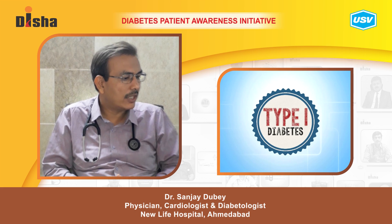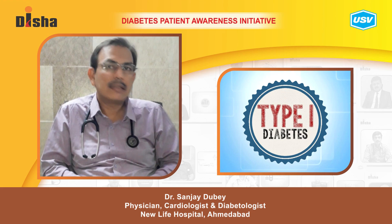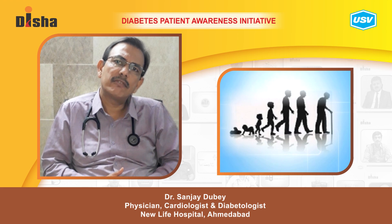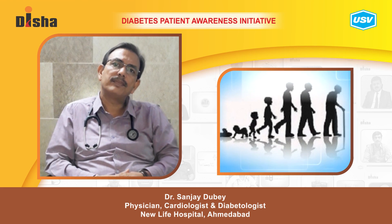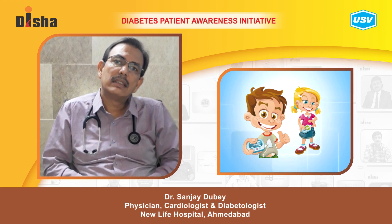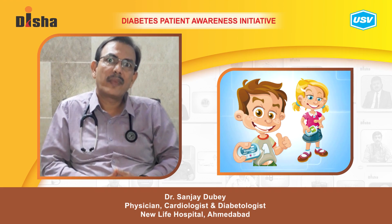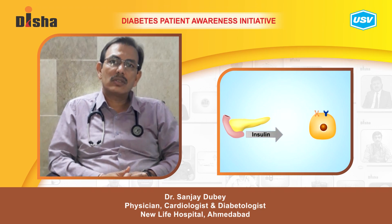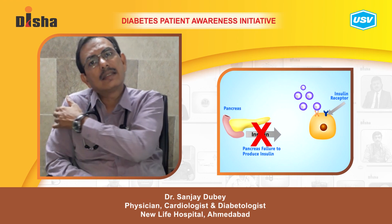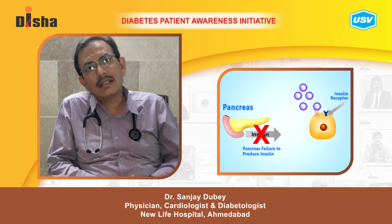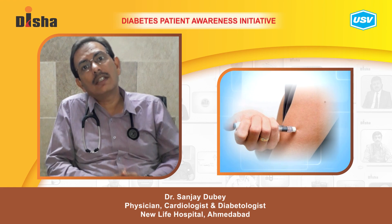Type 1 diabetes is hereditary. It is seen mainly in young children, that's why it is called juvenile diabetes. It is mainly because of the autoimmune destruction of beta cells, so it is seen right from childhood. It requires mainly insulin for treatment.